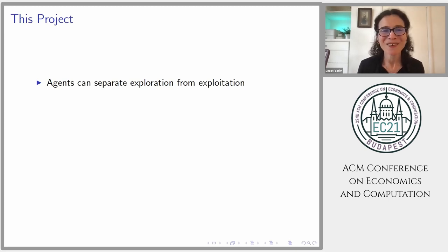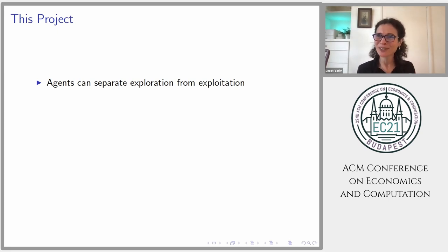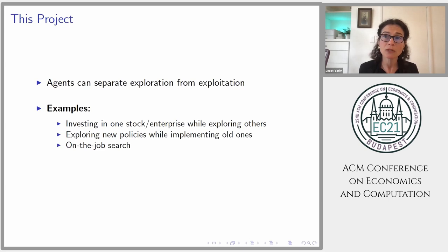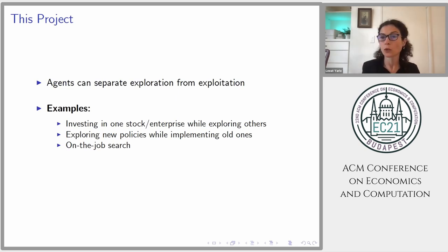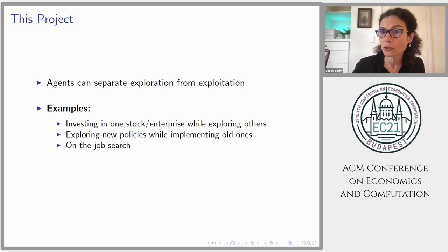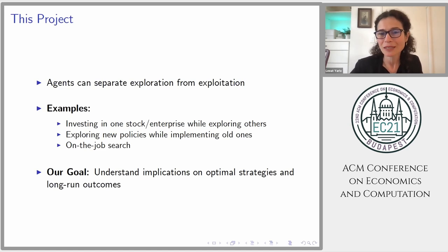So what are we doing here? We're going to modify this canonical model in one particular way. A critic might call it a tweak on the canonical model: we're going to allow agents to separate exploration from exploitation. We think this is actually relevant for most applications of these models, since it's very rare that exploration and exploitation are fully intertwined. For example: if you invest in one stock you can explore others; if you explore new policies they don't have to be the ones you utilize; on-the-job search you might be working in one job but looking into other opportunities. Our goal is to understand the implications on both the optimal strategies and the long-run outcomes in such settings.